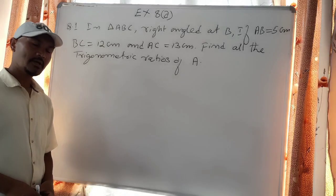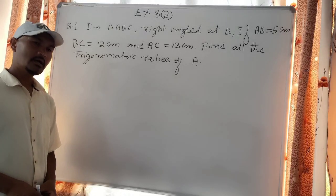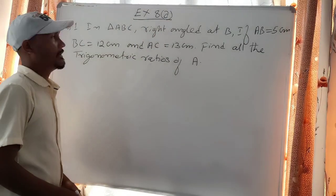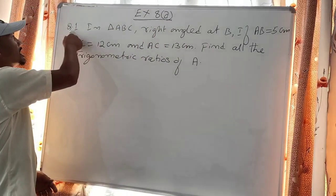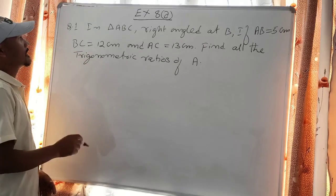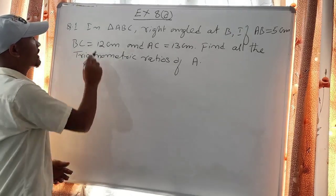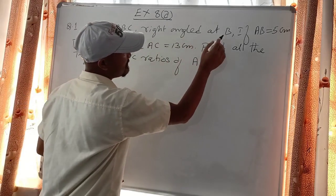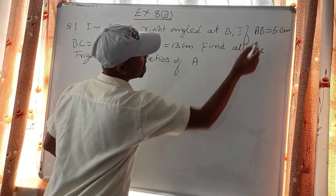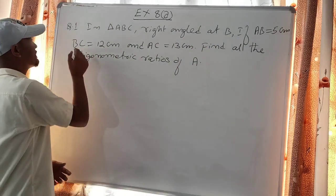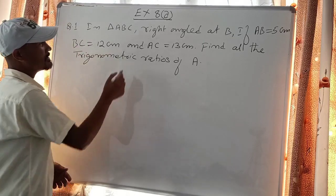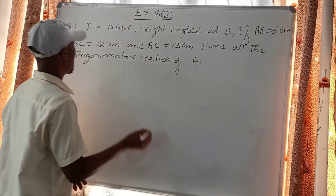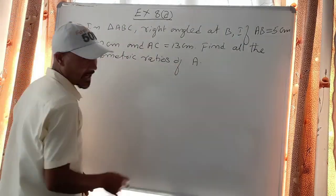Exercise A. In triangle ABC, right angle at B. If AB equals 5 cm, BC equals 12 cm, and AC equals 13 cm, find all the trigonometric ratios of A.